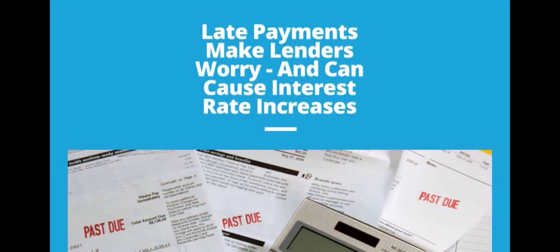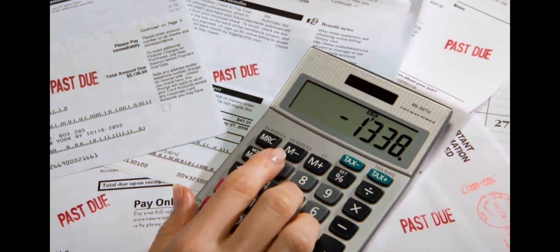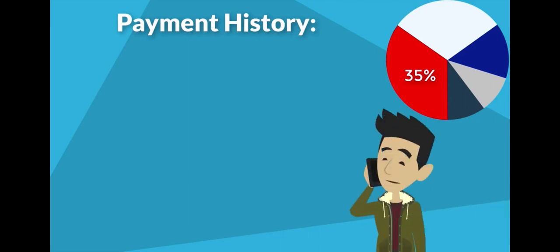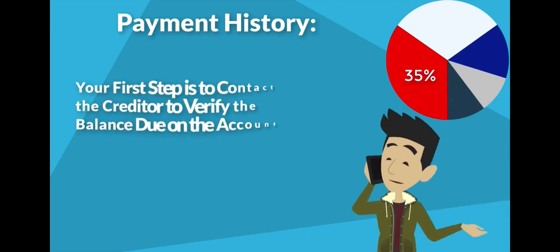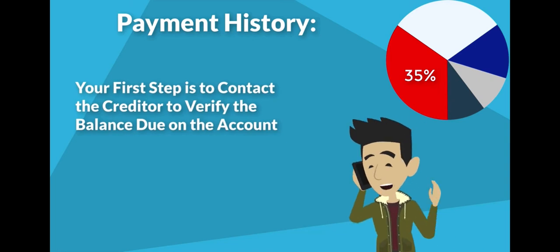Late payments, especially on large loans such as mortgages, make lenders worry that the loan will not be repaid and can cause a large increase in your interest rate, meaning you could be paying much more overall. If you are currently past due on any of your accounts, your first step before you pay the amount owed should be to contact the creditor to verify the actual balance due.